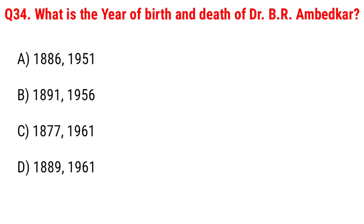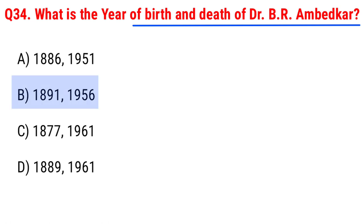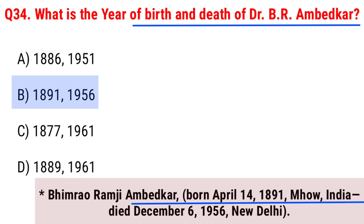Next question: what are the year of birth and death of Dr. B.R. Ambedkar? Option A, 1886 and 1951; B, 1891 and 1956; C, 1877 and 1961; D, 1889 and 1961. The right answer is Option B, 1891 and 1956. B.R. Ambedkar was born on April 14, 1891 in Mhow, India, and died on December 6, 1956 in New Delhi.